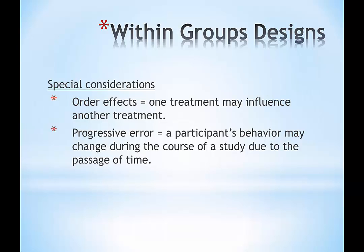Another thing that happens—especially in repeated measures over time—is something called progressive error, where your behavior might change during the course of a study due to the passage of time and not due to the independent variable manipulation. Sometimes you'll see this as a positive: you start getting cues and pay attention to them. Or you might see it as negative fatigue. You start a weight loss study excited, doing the exercise regimen every day for the first three days, then it gets tiring and boring and your behavior changes—not because of the regimen, but because of your own decisions.